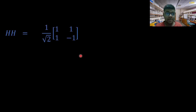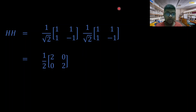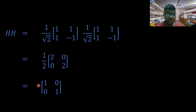Let's carry out the multiplication for two Hadamard gates — the Hadamard gate applied on itself. We substitute the matrix for the Hadamard gate and carry out this matrix multiplication. What we get is a result where, if we factor out the one-half outside the matrix, we end up with a specific matrix. If you carefully observe it, you'll notice it is an identity matrix.